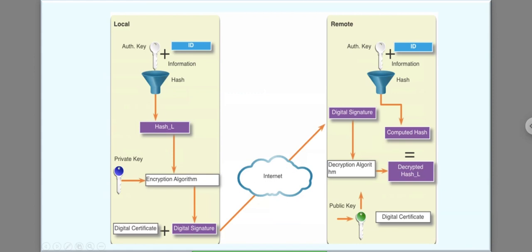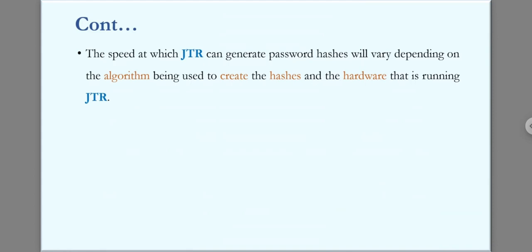If cracking locally, you need physical access to the target machine to retrieve those hashed passwords. If running remotely, you connect to the target machine over the internet and try to locate and download the password hashes to your attacker machine for cracking. The speed at which JTR can generate password hashes will vary depending on which algorithm you are using — whether SHA-1, SHA-2, SHA-3, or RC5/RSA — as well as the performance of your computer hardware.